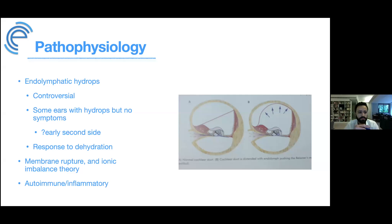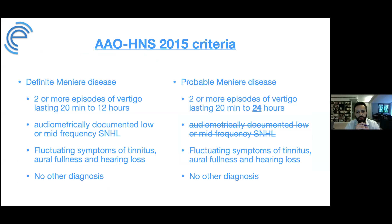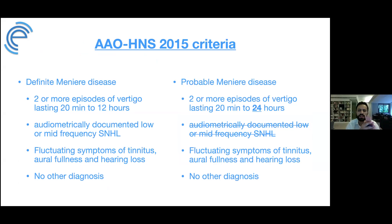The most recent diagnostic criteria for Meniere's disease were published by the American Academy four years ago. Previously we had four categories, including 'certain' which required temporal bone histopathology — meaning the patient had to be deceased. Now we have 'definite' and 'probable' Meniere's disease, and 'possible' has been removed.